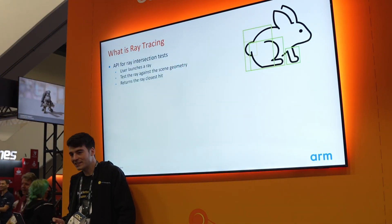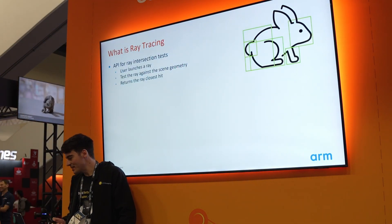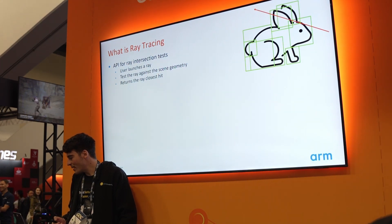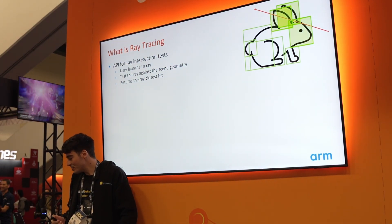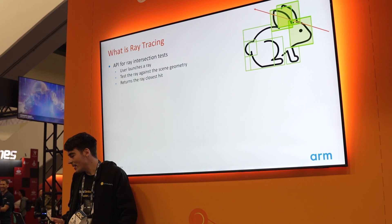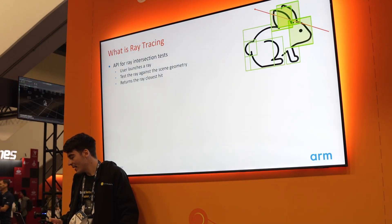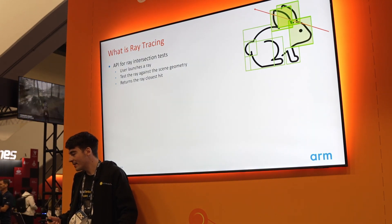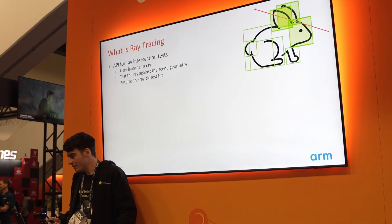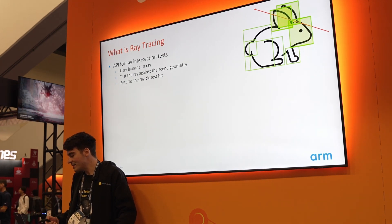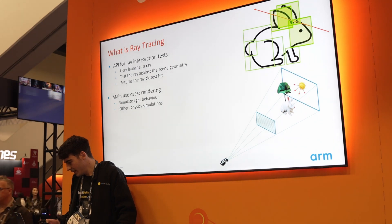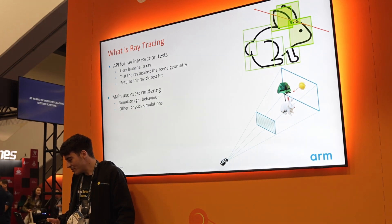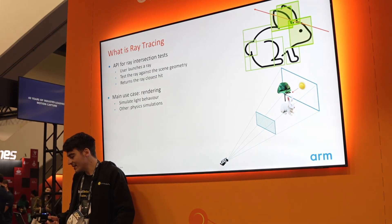First, I would like to explain exactly what ray tracing is. Ray tracing is an API for ray intersection tests. The API allows users to define a ray, setting an origin and a direction, and then test the ray against the scene geometry. The expected behavior is to return the closest hit that this ray will find in the scene geometry.